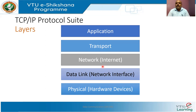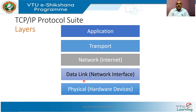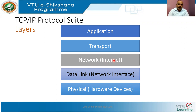In the TCP/IP protocol suite, we have five layers: application layer, transport layer, network layer, data link layer, and physical layer. In the TCP/IP standard, the physical layer is called hardware devices, the data link layer is called network interface, and the network layer is called internet. The transport and application layer names remain the same.